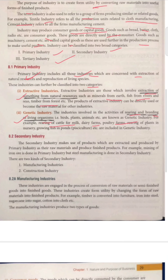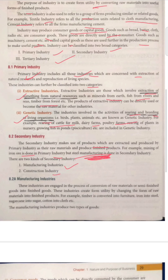Secondary industry makes use of products which are extracted and produced by primary industry. The goods produced in primary industry are used to convert them into final goods. For example, mining of iron is a primary activity, but steel manufacturing — where iron is used to manufacture steel — is secondary industry. Secondary industry is further divided into two categories: manufacturing industries and construction industries. Manufacturing means converting raw materials into finished goods.